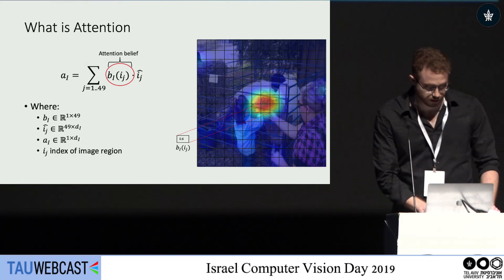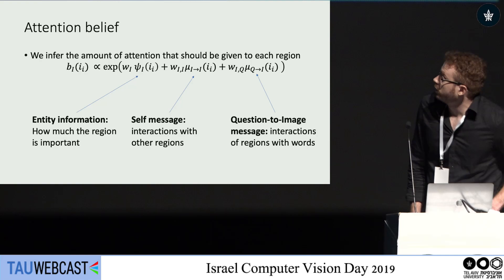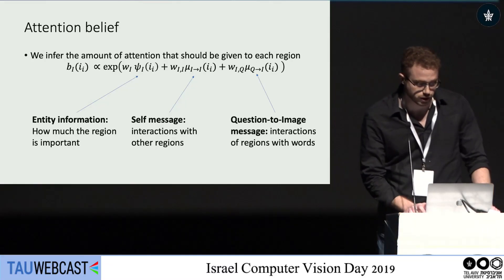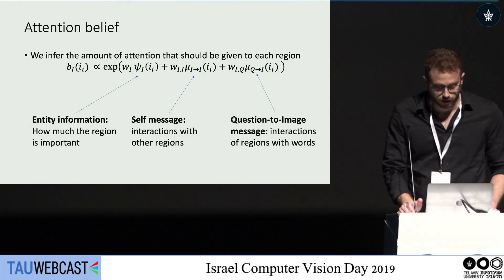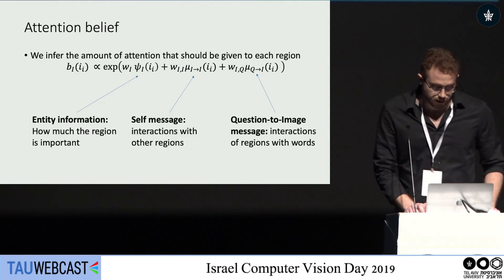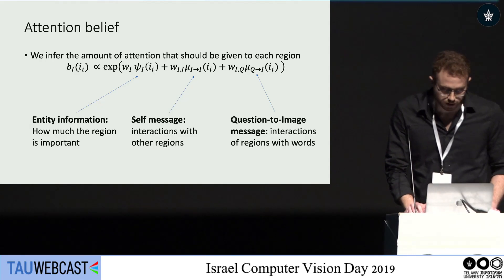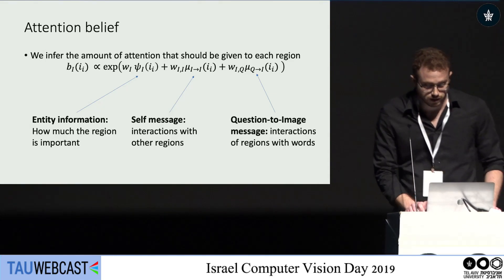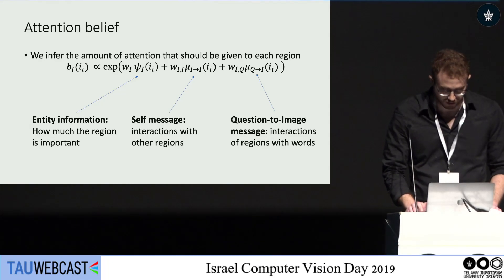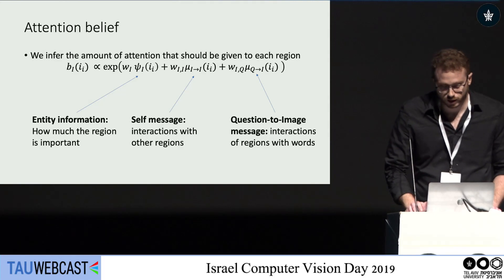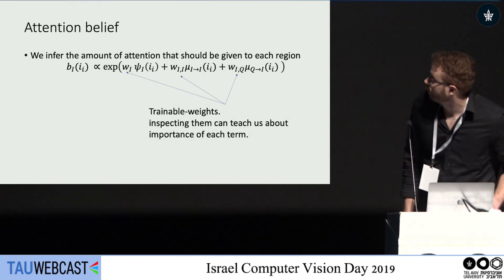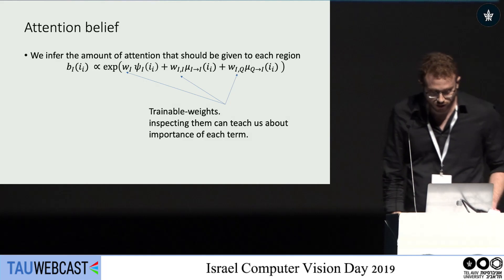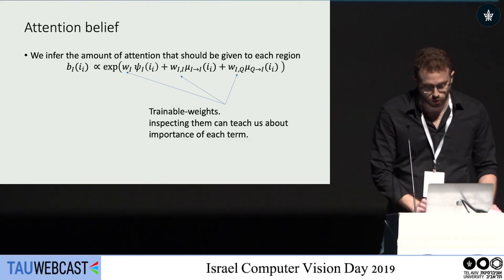How do we infer this attention belief? We chose to have three terms. The first term is entity information — when given a region, we want to understand how important it is without taking into account the other utilities, like the question. The second term is the self-message: how well this region interacts with other regions in the image. The last term, the question-to-image message, talks about the interaction of the region with the words in the question. We also have trainable weights for each term, allowing the model to learn how to calibrate the importance of each term.